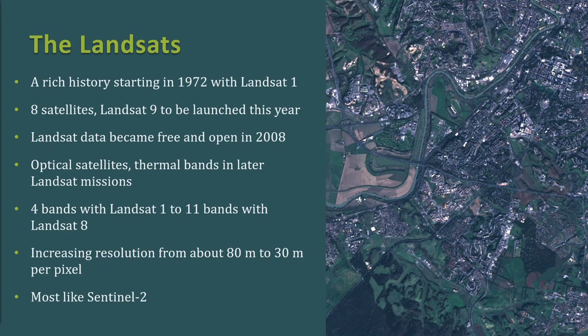Next are the Landsats, which have a rich history starting in 1972 when Landsat 1 was launched. Landsat data became free and open in 2008, meaning after that date you have regularly-intervaled data, while before that you still have data but it's not as regularly intervaled. Landsats are optical missions also offering thermal bands in the later satellites, but not in earlier ones. The band count started at four with Landsat 1 and grew to about 11 with Landsat 8, and resolution improved from about 80 meters to about 30 meters per pixel — most similar to Sentinel-2.